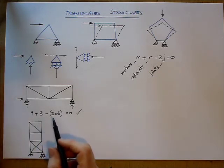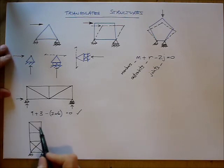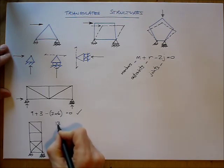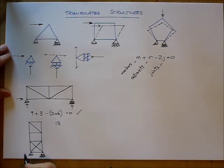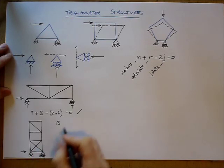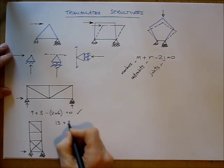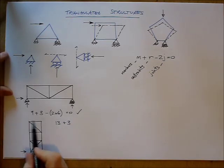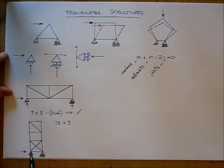Number of members. 1, 2, 3, 4, 5, 6, 7, 8, 9, 10, 11, 12, 13. Number of restraints. 1, 2, 3. Can't quite see that, but there's three restraints. Plus 3. Number of joints. 1, 2, 3, 4, 5, 6, 7, 8.